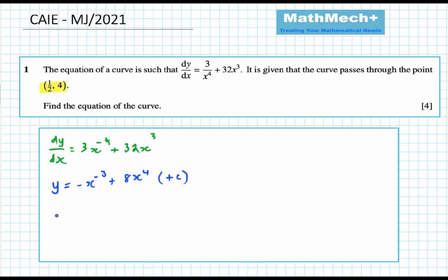So 32 divided by four was eight. We also add c, our constant of integration. And with our point x and y, half and four, we sub these in to get the value for c on our curve, rewriting this equation.